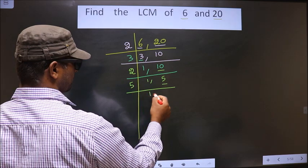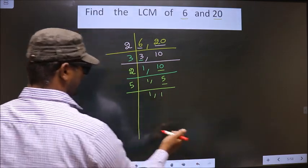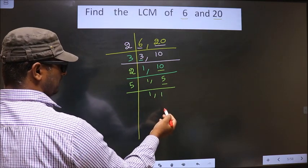So now we got 5 which is a prime number. So we take 5 here. 5 and 5. Now, we got 1 in both the places.